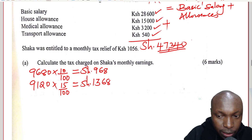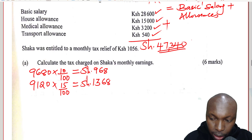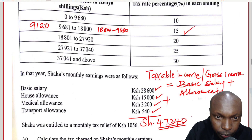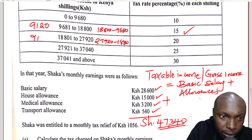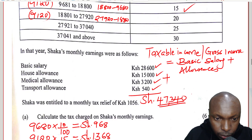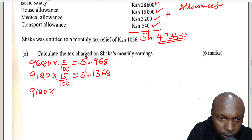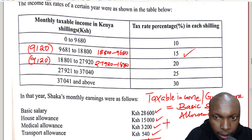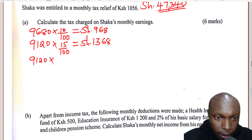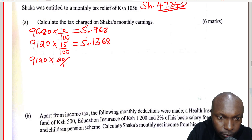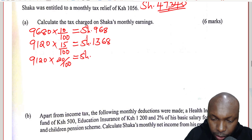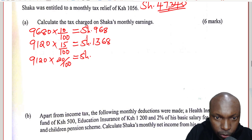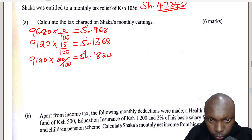We proceed — we are taxing 47,340. We go to the third slab: 27,920 subtract 18,800 gives a size of 9,120, and the tax rate is 20%. So 9,120 multiplied by 20% gives 1,824.